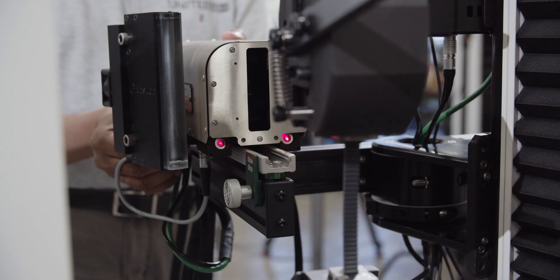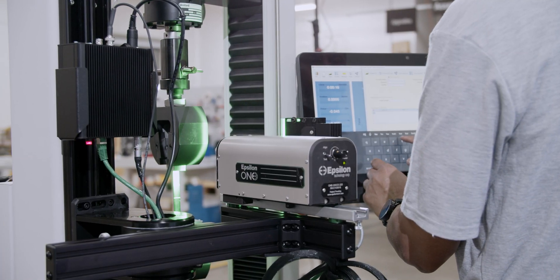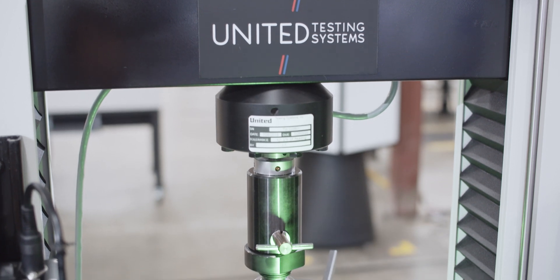The EP1's electronics, combined with United's Datum 5i materials testing software package, gives our customers a complete, highly accurate, non-contact strain measurement system.